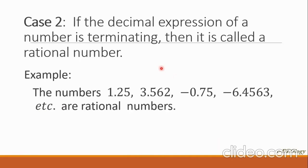For case two, when we have a decimal expression, a decimal is called a rational number if it is terminating. Examples include 1.25, 3.562, negative 0.75, and negative 6.4563. These are terminating decimals and they are called rational numbers.